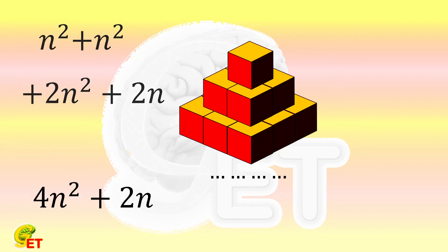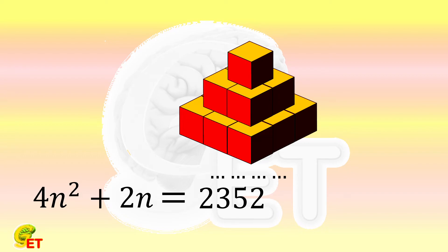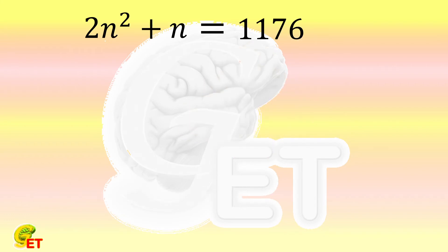So the entire surface area is equal to 4 times square of n plus 2 times n, which is known to be 2352. The rest becomes a pure problem of solving a quadratic equation in one variable. Let's simplify it a little bit and get 2 times square of n plus n equals 1176.